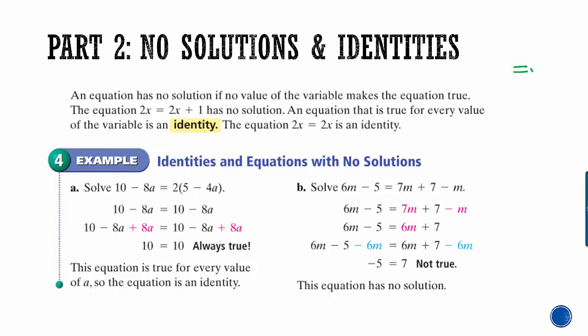So an equation has no solution if no value makes the equation true. Remember, when we have an equal sign like this, we're just saying whatever's on the left has to be the same value as whatever's on the right. So sometimes it's impossible to get those two values the same. And then we say that they're not equal, or there's no solution. So this equation right here, 2x equals 2x plus 1, has no solution. Because it doesn't matter what you plug in for x. This right here makes it not equal to that every single time. So an equation is true for every value when it's an identity. The equation 2x equals 2x is an identity because it doesn't matter what you plug in. You're getting the exact same thing on both sides no matter what.